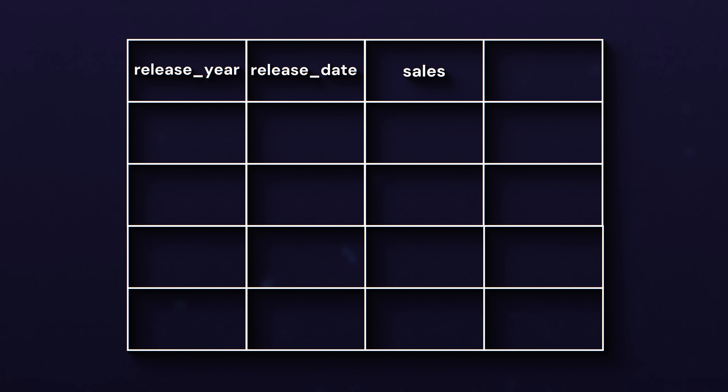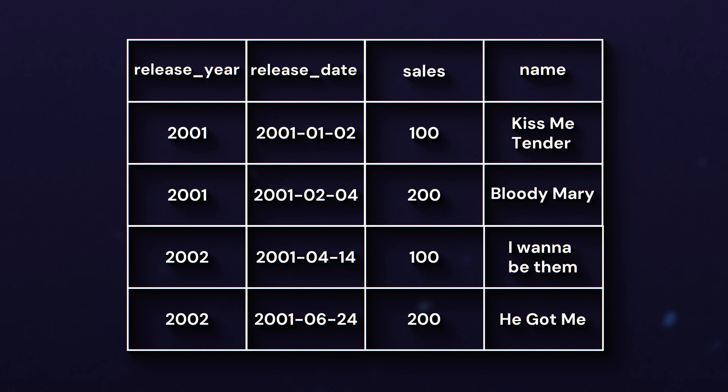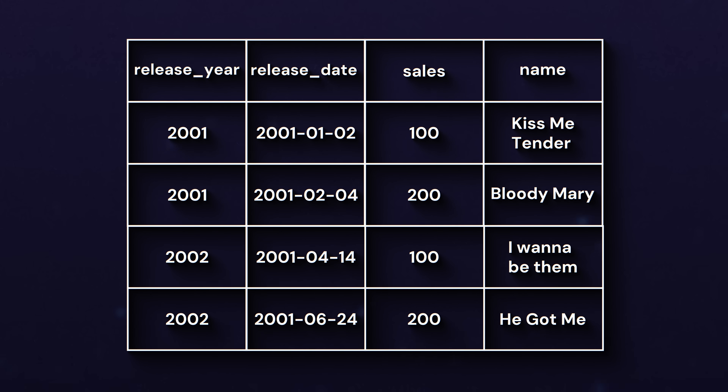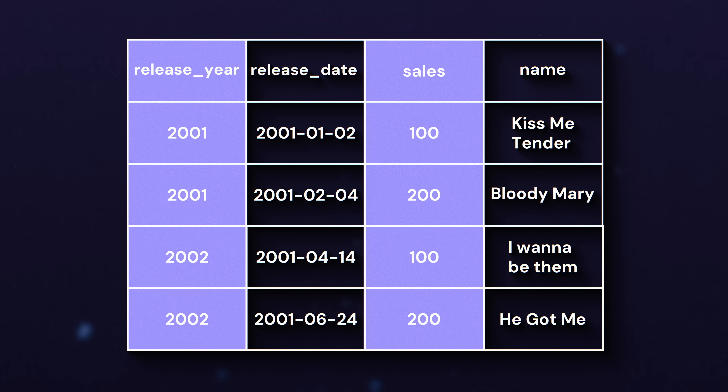It's important to note that Boyce-Codd normal form, or BCNF, was invented after first, second, and third normal forms once they realized there was still a way for duplicate data to slip into tables. For BCNF to matter, the database has to be in a very specific state. Say we have a table with four columns: release year, release date, sales, and name. We have several possible candidate primary keys — name on its own, a combination of release year and sales, or the date column on its own. If we choose release year and sales as our primary key, the problem is that release year is fully dependent on the release date column.